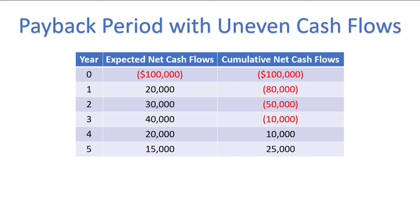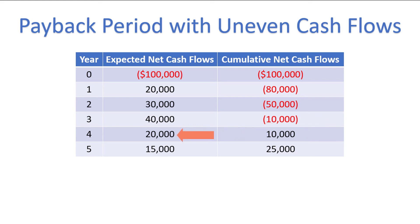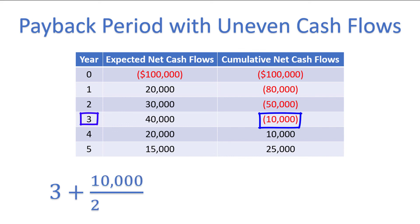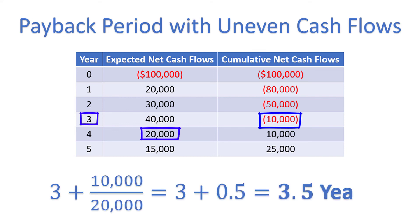The payback period is the year in which the cumulative net cash flows change from negative to positive. We see that after year 3, the cumulative net cash flows are still negative, but after year 4, they are positive. This tells us that the payback period happens somewhere between years 3 and 4. If we assume the $20,000 in cash flow was earned equally throughout the year, we can find the payback period by taking year 3 and adding the cumulative net cash flows before year 4 as a positive number, $10,000, divided by the expected cash flows in that year, $20,000. When we simplify, we get 3.5, so the payback period is 3 and a half years.